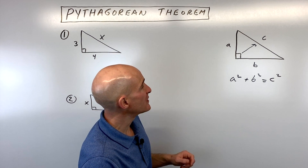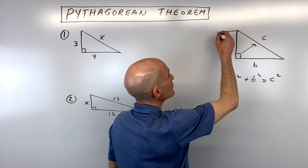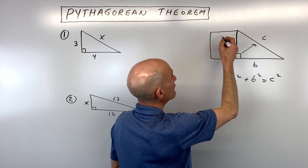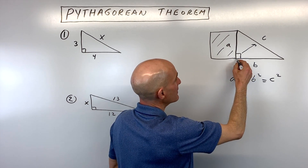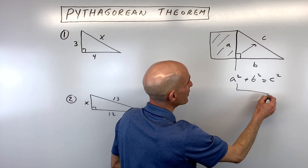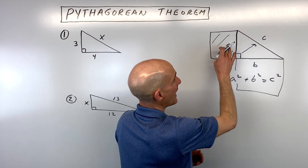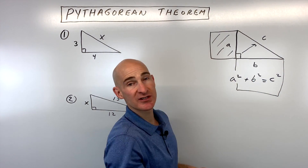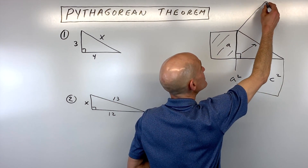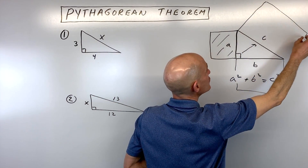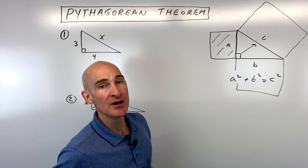What you can think about geometrically is if you were to make this into a square and find this area, and then make this into a square and find the area, add those two areas together, it's going to equal the area of this third square, which is the hypotenuse squared.